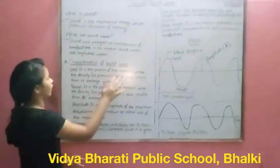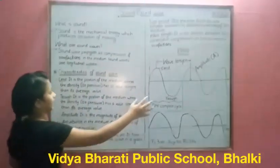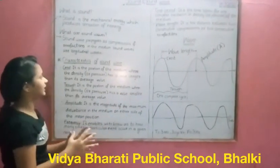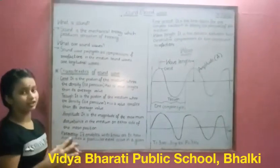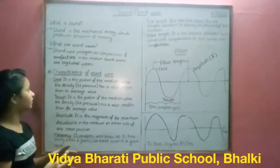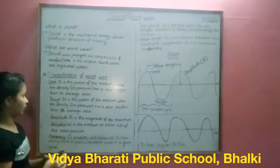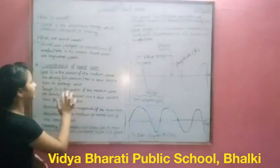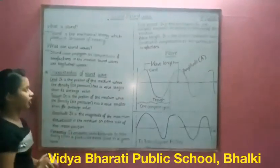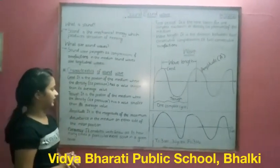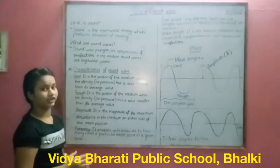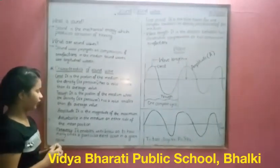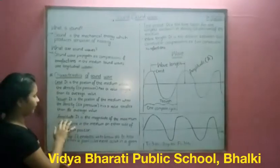Characteristics of sound waves. Crest: it is the portion of the medium where the density has a value larger than its average value. Trough: it is the portion of the medium where the density has a value smaller than its average value.